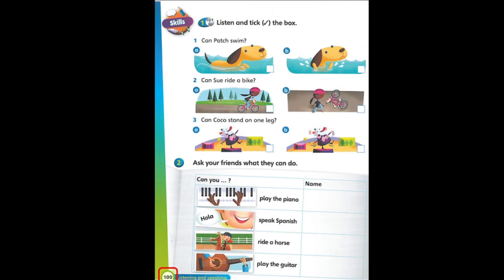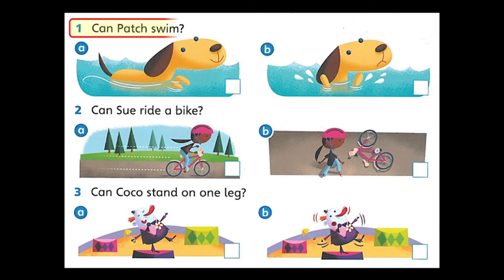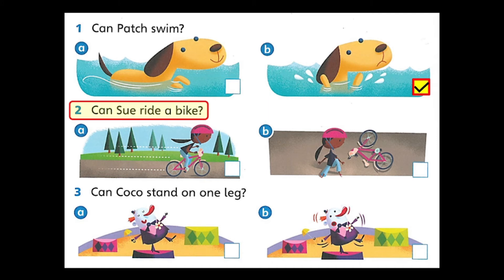Students' Book, page 100. 1. Listen and tick the box. 1. Can Patch swim? Patch can't swim. No, he can't. Look, he's in trouble. 2. Can Sue ride a bike? Can you ride a bike? No, I can't. But my sister Sue can ride a bike. Look, here she comes now.